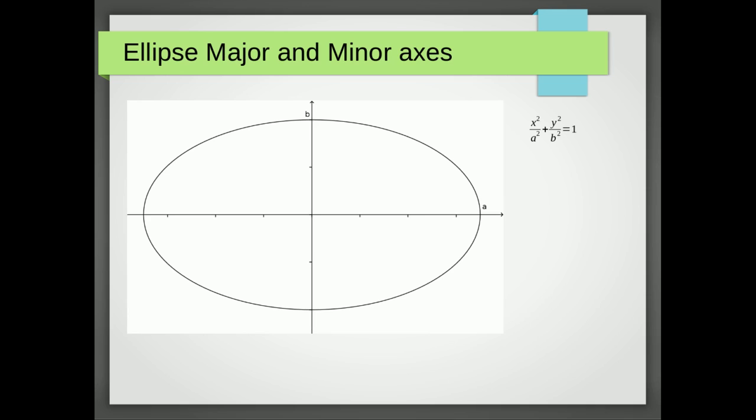The terms major and minor axes are to do with the shape of the ellipse. We've got the major axes on the x-axis because that is where the ellipse is wider.